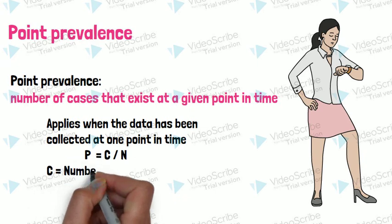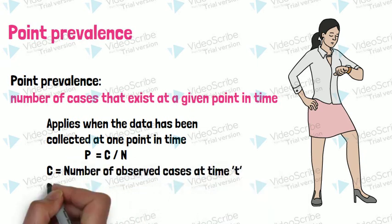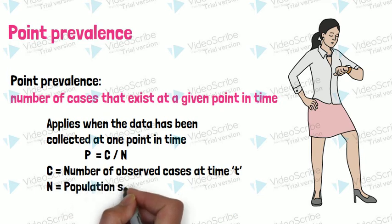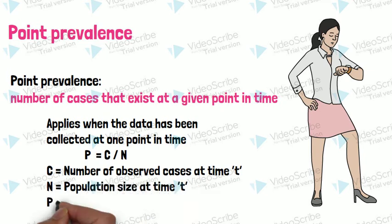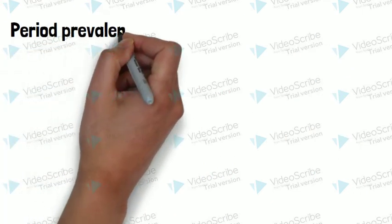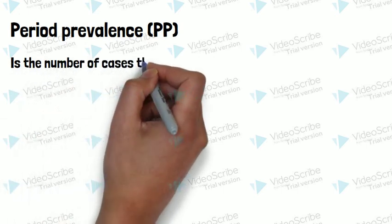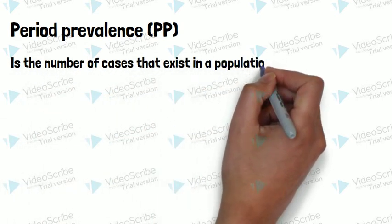C means the number of observed cases at time T. N means population size at time T, and P is point prevalence. Period prevalence is the number of cases that exist in the population during a specified period of time. Period prevalence measures the frequency of disease over some time.